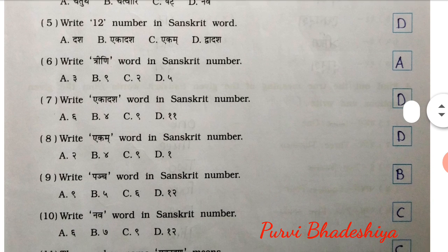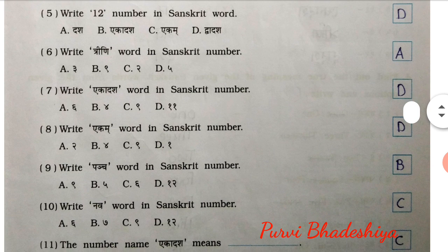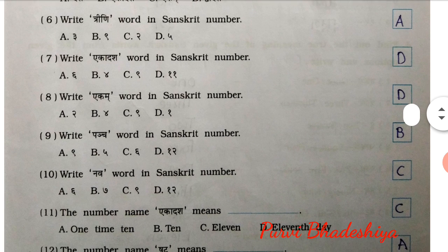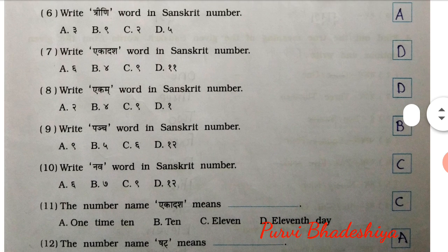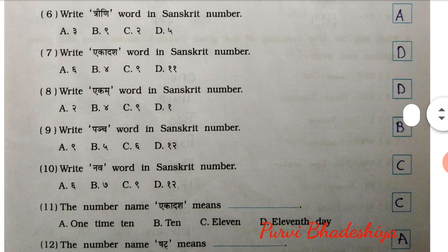5th: Write 12 number in Sanskrit word. So the answer is D — Dwardash. 6th: Write 3-ni word in Sanskrit number. So the answer is A — 3rd.